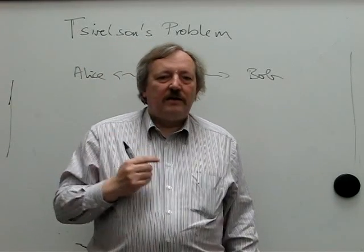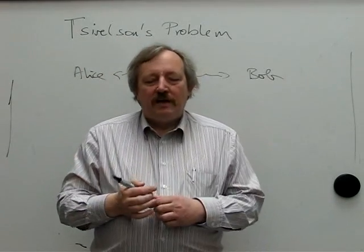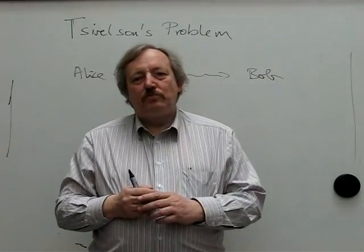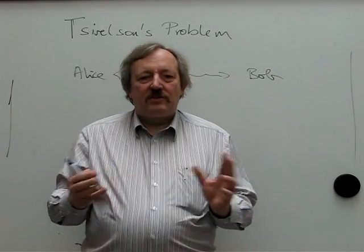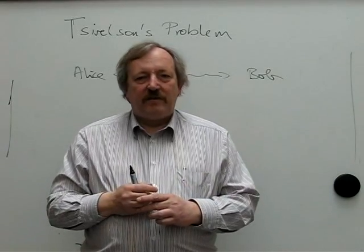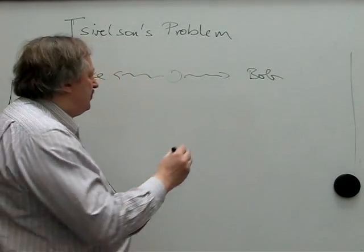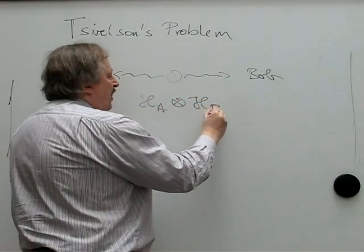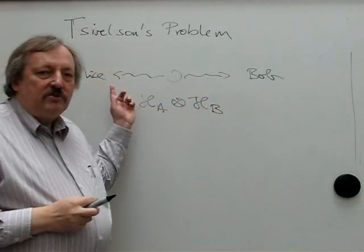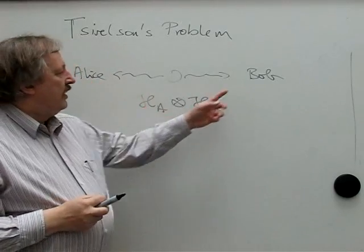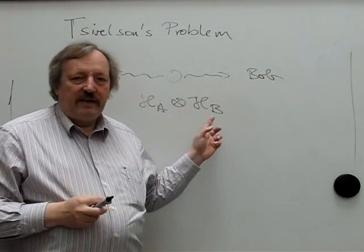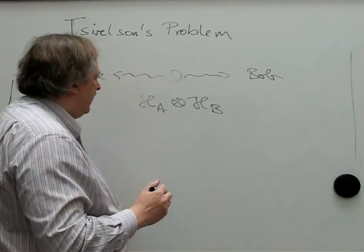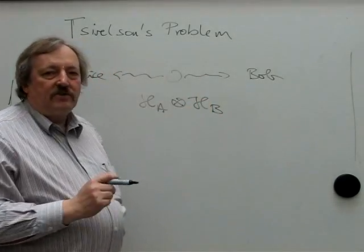It turns out that there are two options in the formulation of what Alice and Bob can control in these problems, and it's not clear whether they give the same maximal values. One option is to say that we have a tensor product of Hilbert spaces, where everything Alice measures is an operator on one space and everything Bob measures is an operator on the other, and then you ask what is the maximum possible value of such a correlation.